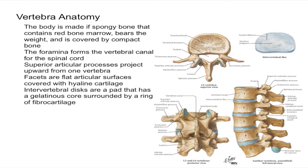Next, we're going to talk about the vertebral arches. The vertebral arches have two processes: the transverse process, which is right here, as well as the spinous process, which is right here. The spinous process is always directed posteriorly and downward, while the transverse process extends laterally. These processes provide attachment points for ligaments and muscles.